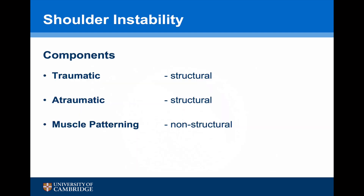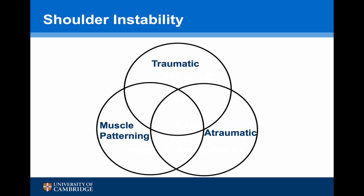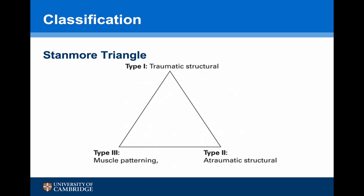Our current understanding of shoulder instability is that it has three components: a traumatic structural component, an atraumatic structural component, and a muscle patterning non-structural component. These three overlapping components can be represented in a Venn diagram but are far better described in the Stanmore triangle. The triangle has three poles: Type 1 is traumatic structural, Type 2 is atraumatic structural, and Type 3 is muscle patterning.